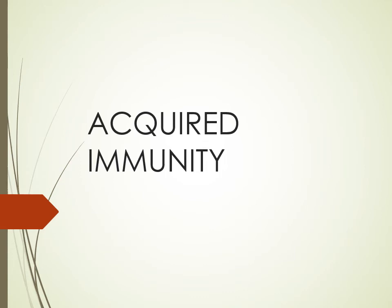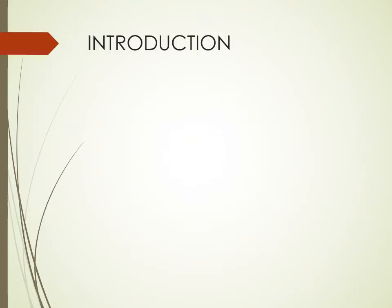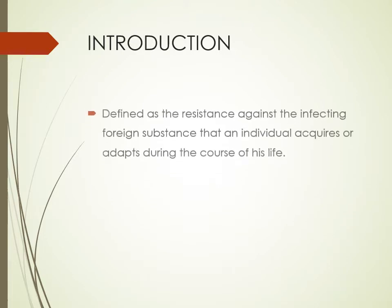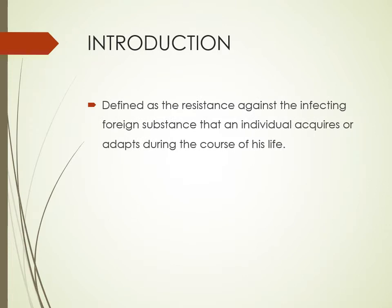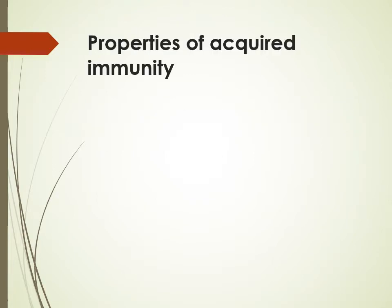Good morning friends. Today we will learn about another part of the immunology section — acquired immunity. As we learned in the previous lecture about what is immunity and the different types — innate and acquired immunity — today we will learn about acquired immunity: what it means, how we develop it, what its components are, and how it works.